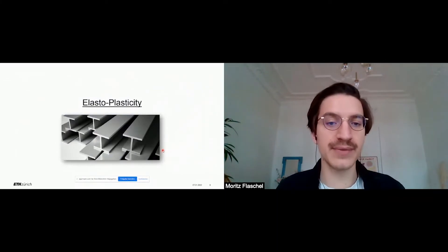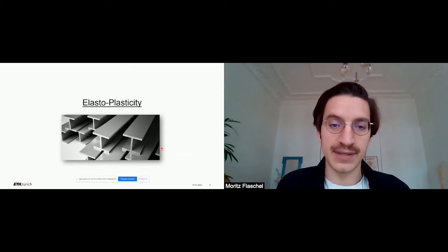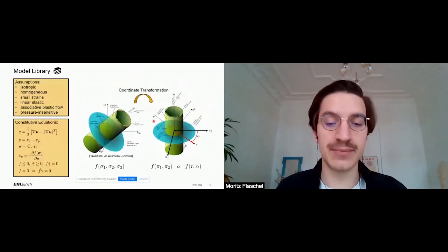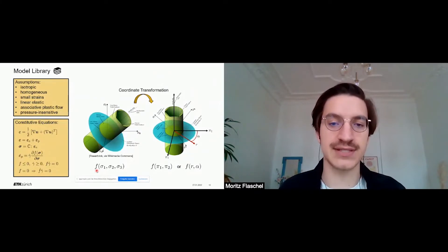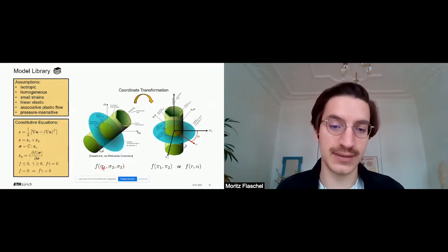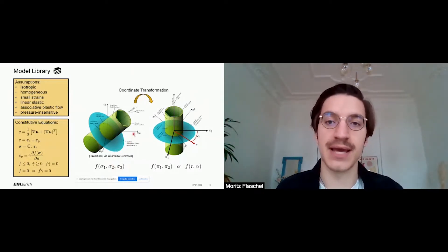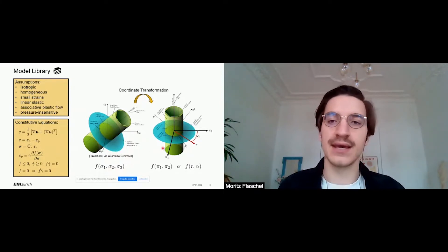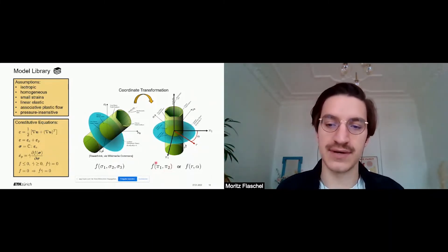In the case of plastically deforming materials, we cannot anymore assume that there is no dissipation. In plasticity, the material deforms plastically after reaching some stress level. This material behavior is characterized by the material characteristic yield function f, which indicates after which stress level the plastic deformation occurs. If we assume isotropic homogeneous material behavior, the yield function can be expressed as a function of three principal stress invariants. If we further assume pressure insensitivity and apply a coordinate transformation to the principal stress space, the yield function can be expressed as a function of only two stress invariants. The goal is now to use the data to discover these yield functions.